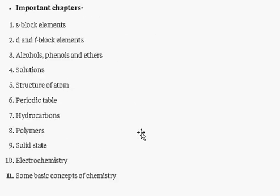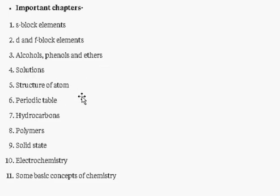After doing the do or die chapters, you can refer to S-Block elements, D and F-Block elements, Alcohols, Phenols and Ethers, Solutions, Structure of Atom, Periodic Table, Hydrocarbons, Polymers, Solid State, Electrochemistry, and Some Basic Concepts of Chemistry.